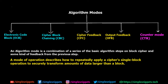The algorithm mode is a combination of a series of basic algorithm steps. These modes essentially operate on block ciphers and incorporate some kind of feedback from the previous step. Mode of operation basically describes how to repeatedly apply a cipher's single-block operation to securely transform amounts of data larger than a block.